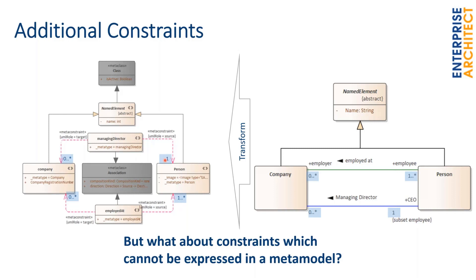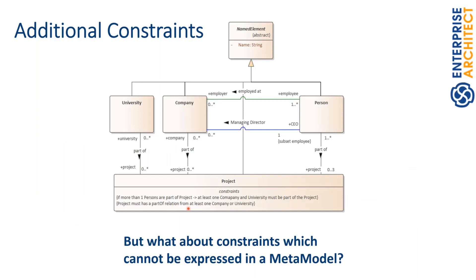Enterprise Architect is a powerful framework which allows extensions, and there are already ways to cope with this. There are also constraints which cannot be expressed in a metamodel using class diagram features. For example, I have extended this metamodel with two other concepts: University and Project. A Company, University, or Person can be part of a Project. I have added multiplicities — the Project has at least one Person which is part of it, a Person can be part of at most three Projects.